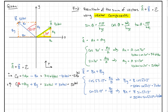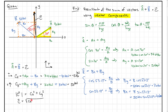Those are the components of our resultant vector. Drawing them in: CX goes back to the left, CY goes up, and the resultant vector C connects them. To get the magnitude, we use the Pythagorean theorem: the magnitude of C equals the square root of CX squared plus CY squared. Plugging in the numbers, we get approximately 50.3 kilonewtons.